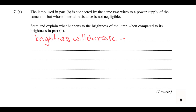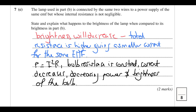Total resistance is higher so there's a smaller current for the same EMF. Using P = I²R for the bulb — the bulb resistance hasn't changed, it's the total resistance that changed — so current decreases, power decreases, and that equates to decreased brightness. That completes this Unit 1 paper.